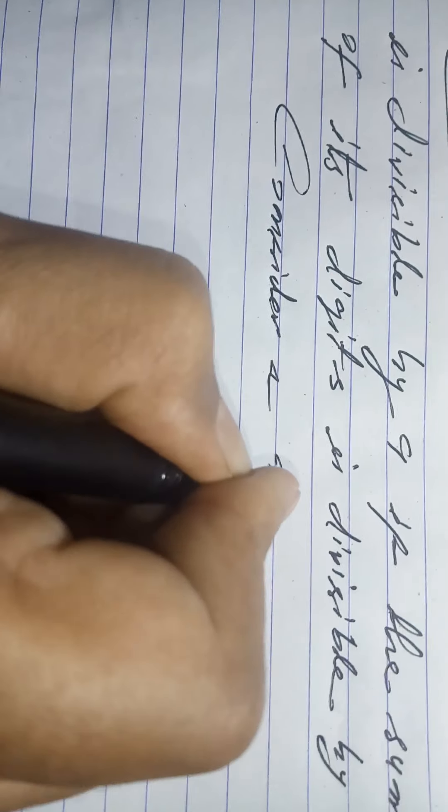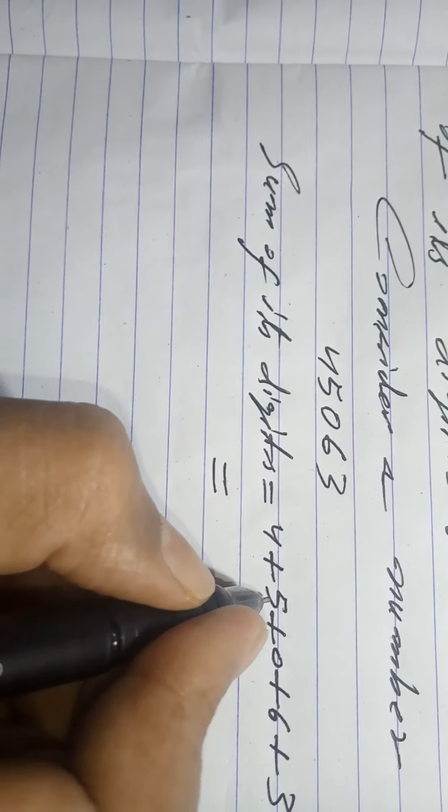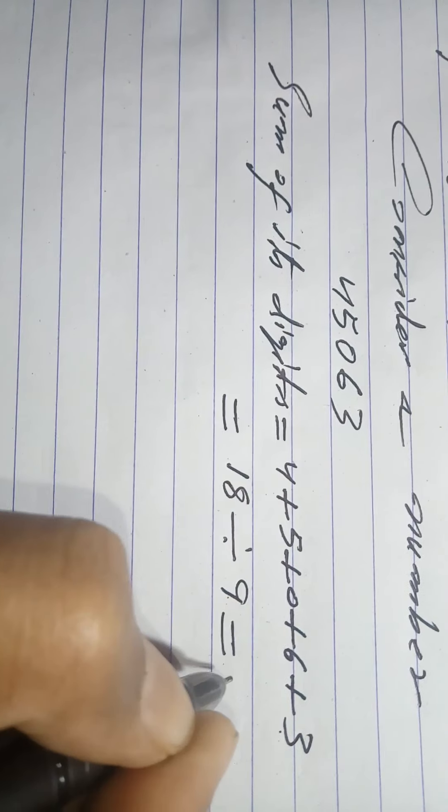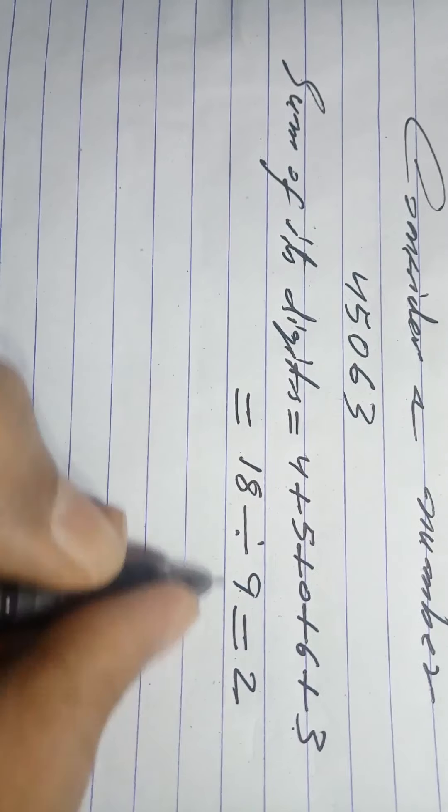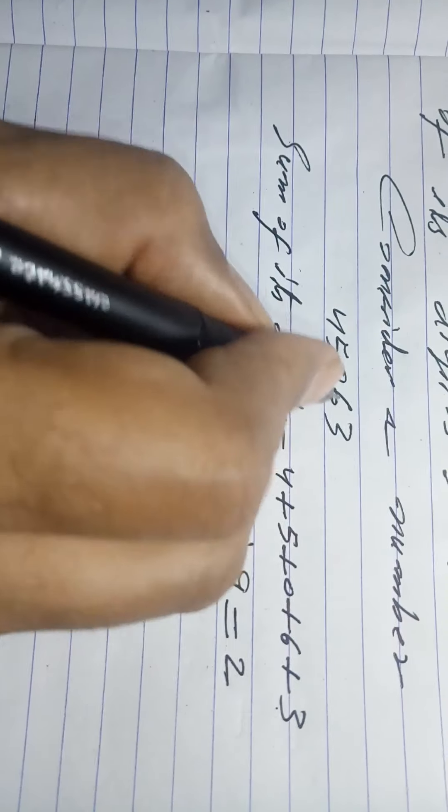Consider the number 45063. The sum of its digits is 4 + 5 + 0 + 6 + 3 = 18. 9 divides 18 completely. So the given number is divisible by 9.